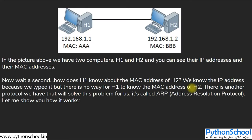In this example we have two computers, H1 and H2. You can see their IP addresses and MAC addresses. H1 needs to know H2's MAC address to send a packet, but there is no mandatory way for H1 to already know H2's MAC address. The IP address can carry a packet from source to destination, but to deliver the packet to the actual intended target we need a MAC address.